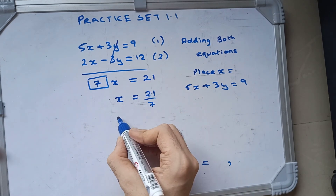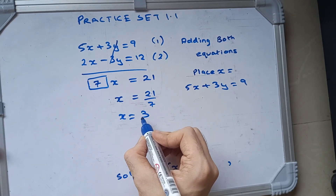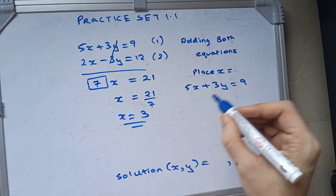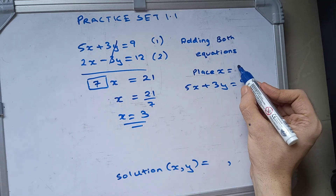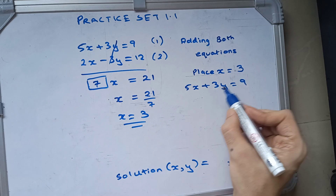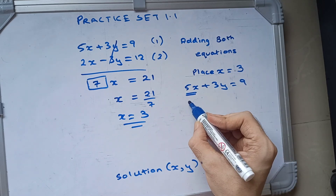Dividing by 7, x is equal to 3. Now we will place the x value as 3 and substitute it right here.